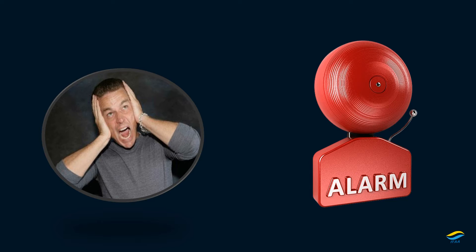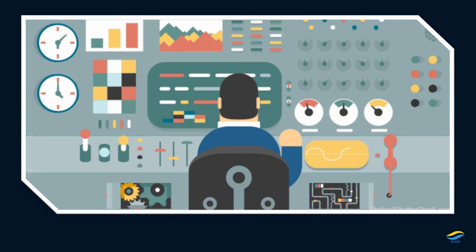Let's talk about what is an alarm. An alarm tells the operator whenever some process is out of control or some equipment stops functioning. Alarm stops equipment and process based on how critical the alarm is. Alarm protects persons, industry, equipment, and the environment.